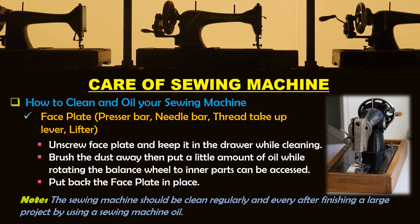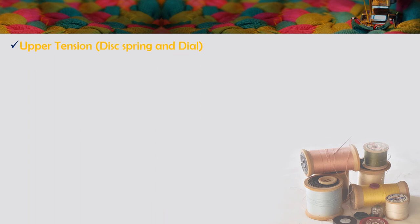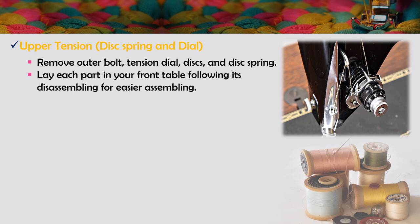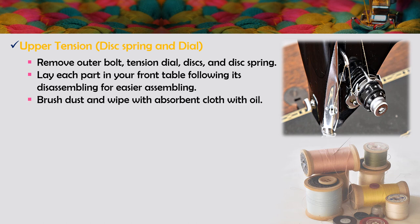The sewing machine should be cleaned regularly and after finishing a large project. To clean the upper tension area, remove the outer bolt, tension dial, disk, and disk spring. Lay parts in order on your front table following their disassembly sequence for easier reassembly. Then brush out dust and wipe with an absorbent cloth with oil.